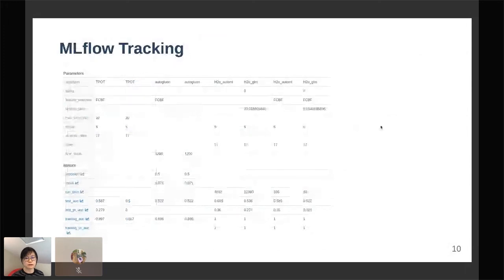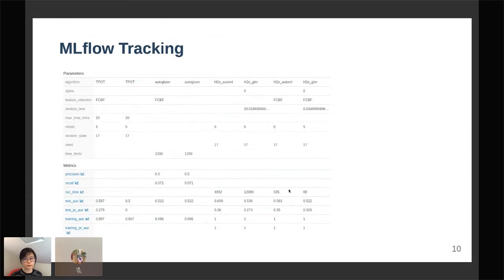With that, I can select these models and then click compare and I get this nice table with all the parameters and metrics that I have tracked. The first thing I notice is that there's very severe overfitting going on because the training metrics is so much better than the test metrics.